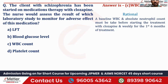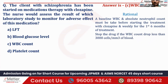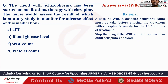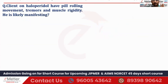The patient is prone for infection because the WBC count is going to decrease. Stop the drug if the WBC count drops less than 3,000 cells per millimeter cube. The normal value of WBC is 4,000 to 11,000 cells per millimeter cube, but if it drops below 3,000, we must immediately stop the drug.